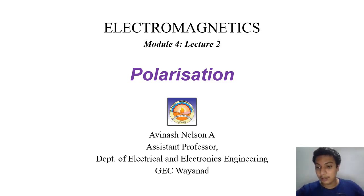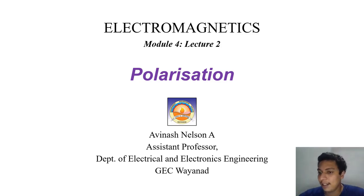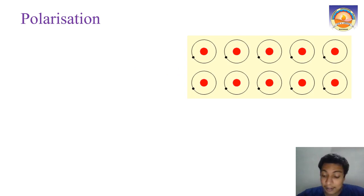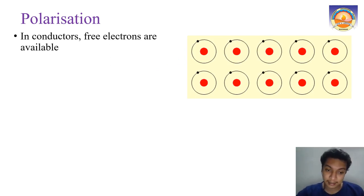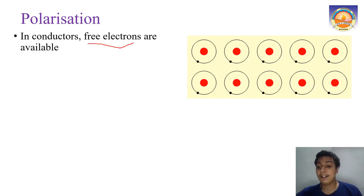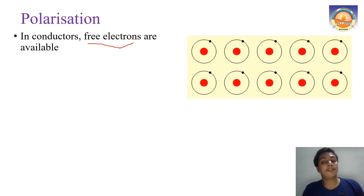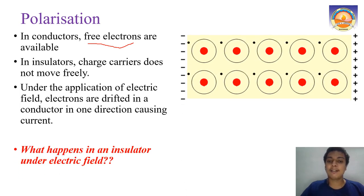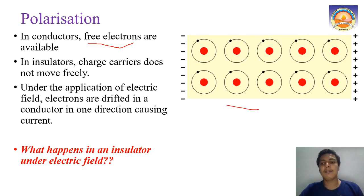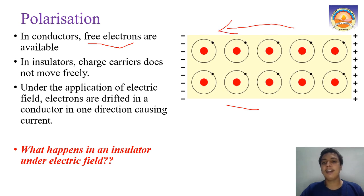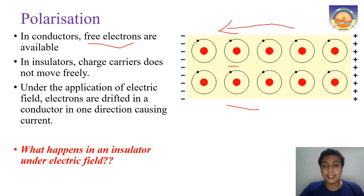Till now we discussed conductors. The peculiarity of conductors is that they have free electrons, which is why conductivity sigma is very much greater than 1. When you apply an electric field — with a positive plate on one side and a negative plate on the other — electrons move in the opposite direction, drifting from atom to atom, causing current.